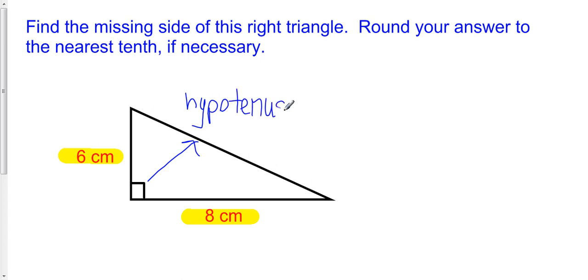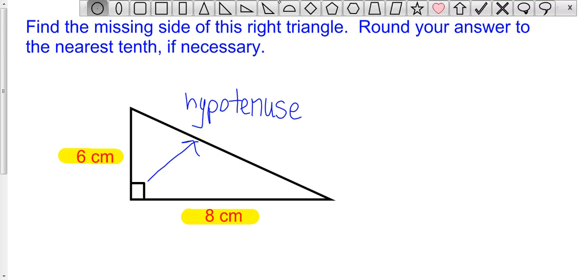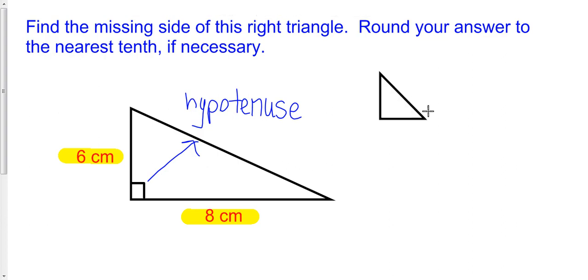And to solve this problem, today we are going to use something called the Pythagorean Theorem. And the Pythagorean Theorem states that if we have a right triangle, whose legs are A and B, so A and B are the legs,